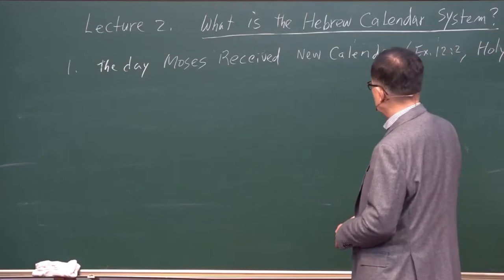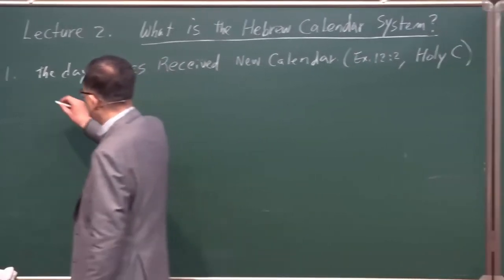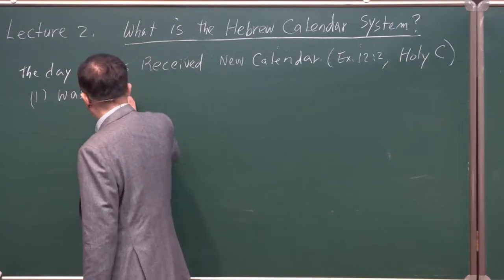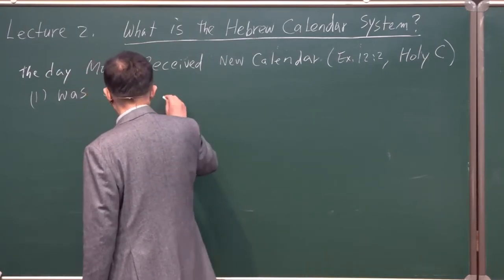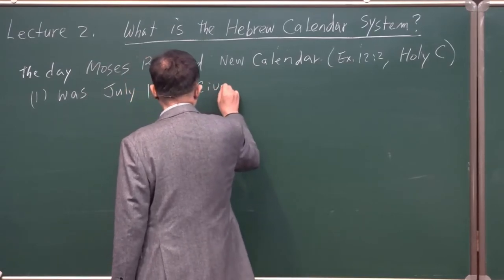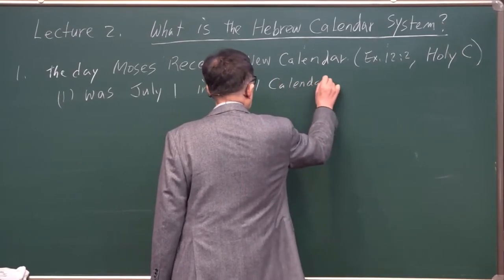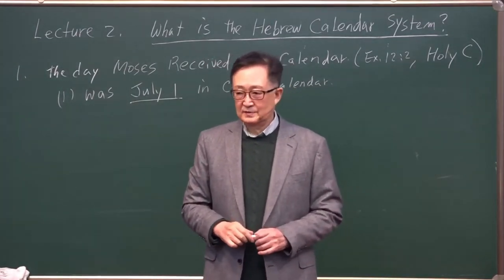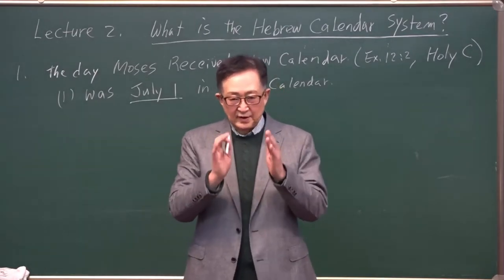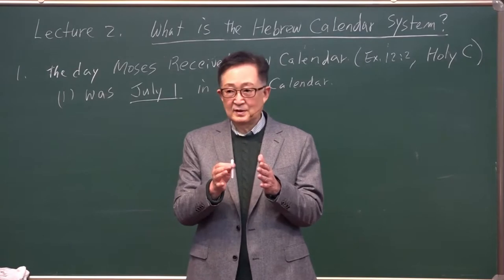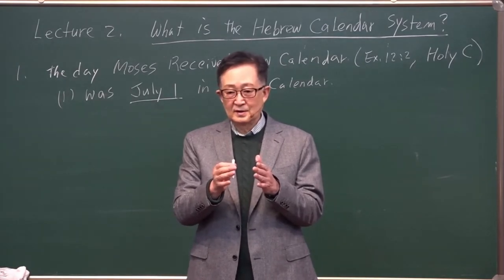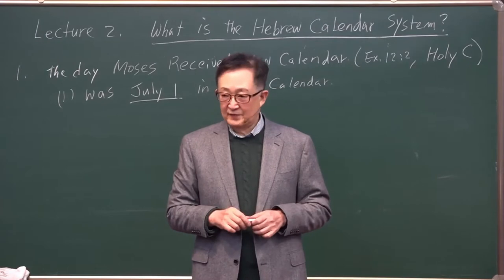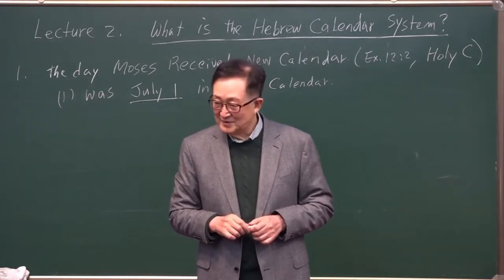Moses received a new calendar. The Holy calendar was July 1 in the Civil calendar. In other words, Moses, today is July 1. Then you create a new calendar, so you make July 1 January 1.